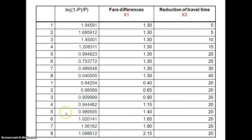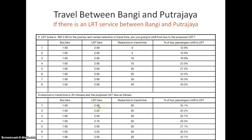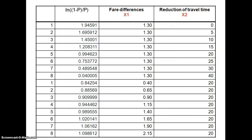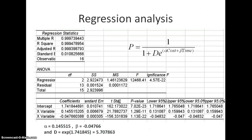But if the travel time reduction is 40%, then 49% would use the LRT. We varied the LRT fare between 2 ringgit and 3 ringgit 50 cents, and with the same travel time reduction, you can see the fluctuation in willingness to shift from bus to LRT. If we manipulate the data using ln((1 - P) / P) and analyze it with linear regression, we get a very good statistical result — all variables are significant.